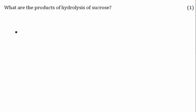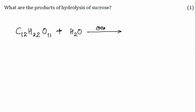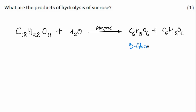The reaction: C12H22O11 (sucrose) undergoes hydrolysis — addition of water in the presence of an enzyme — and you get glucose C6H12O6 plus C6H12O6. Importantly, one is D-glucose and the other is D-fructose.